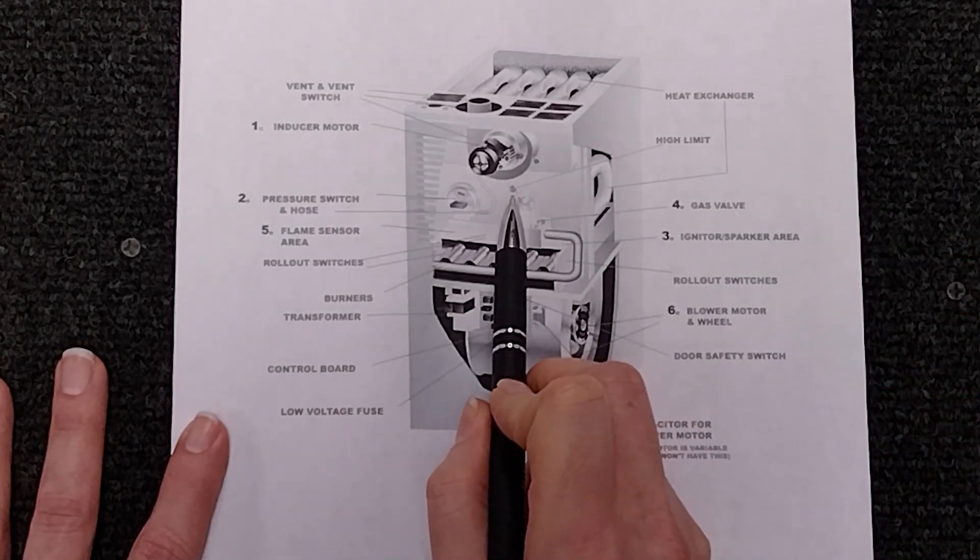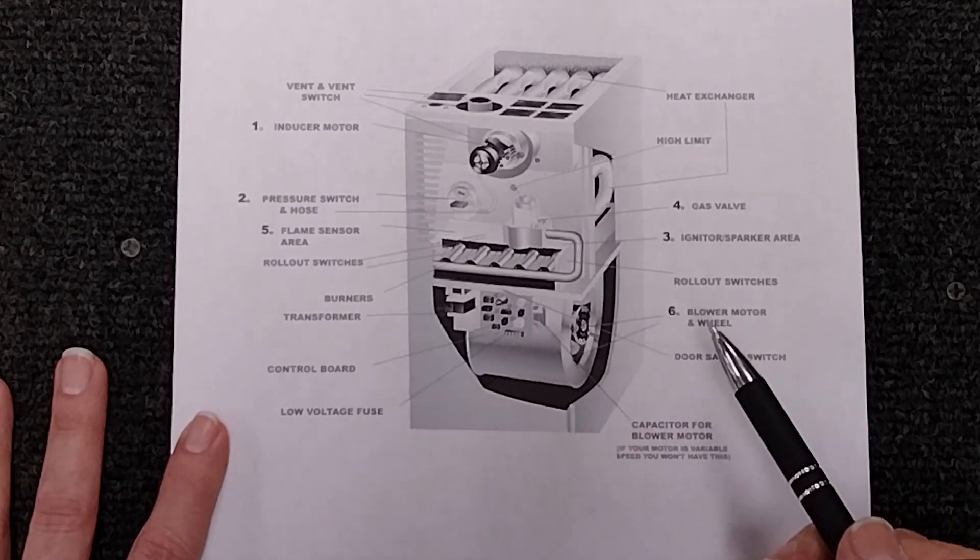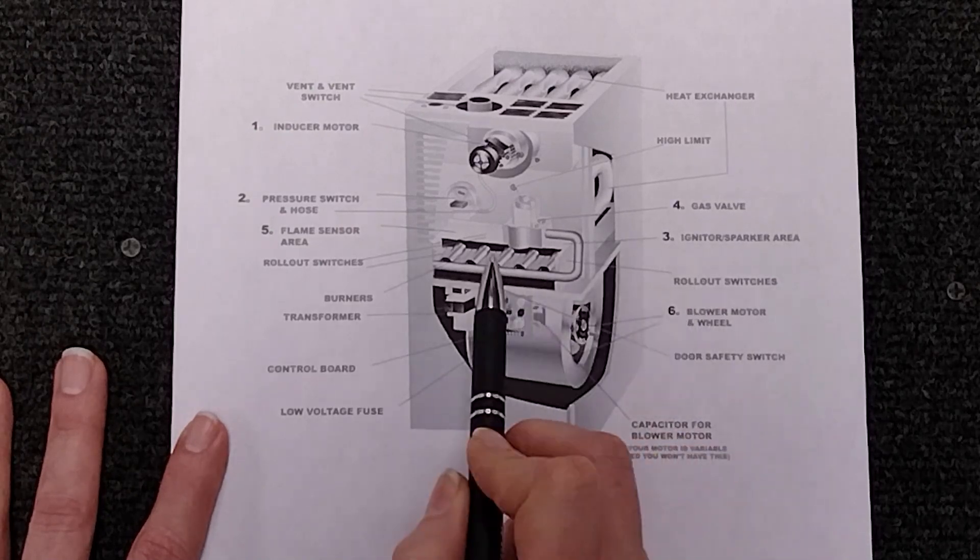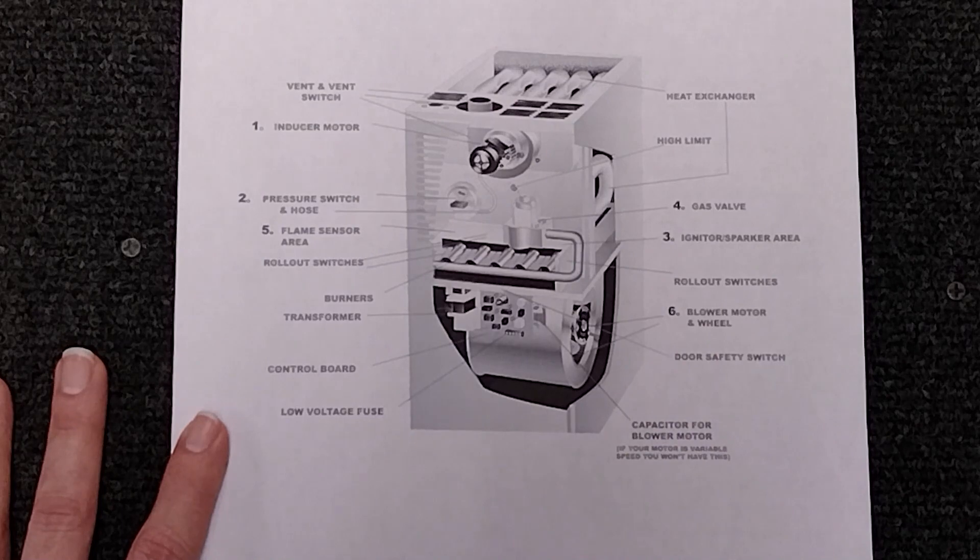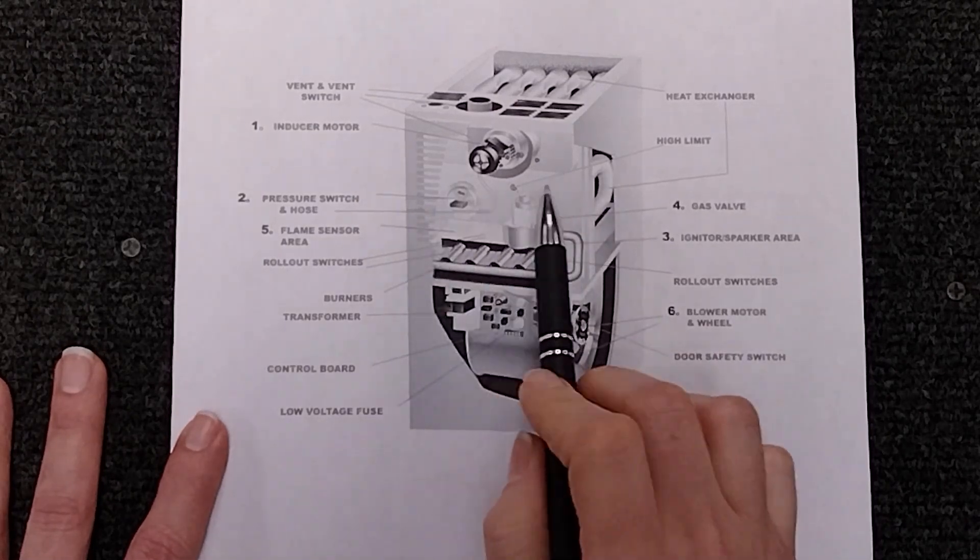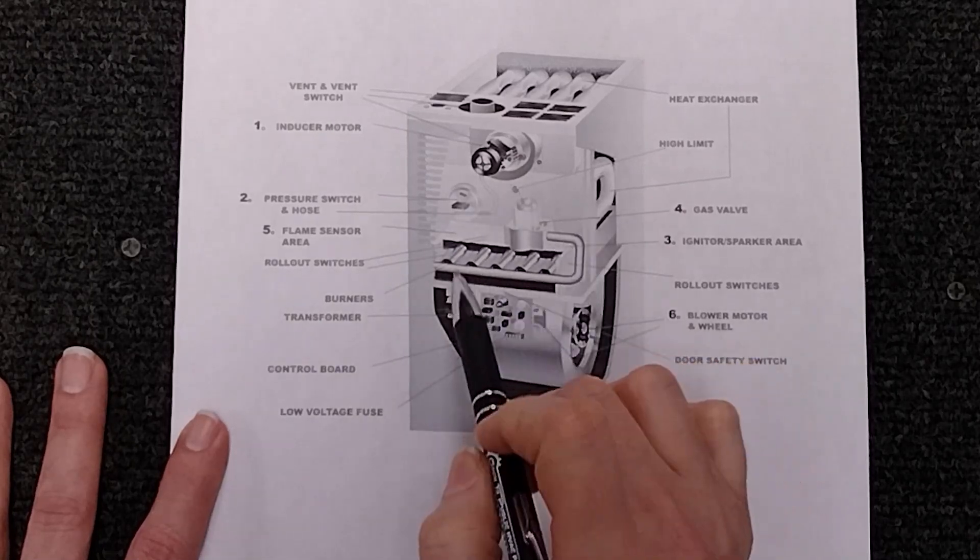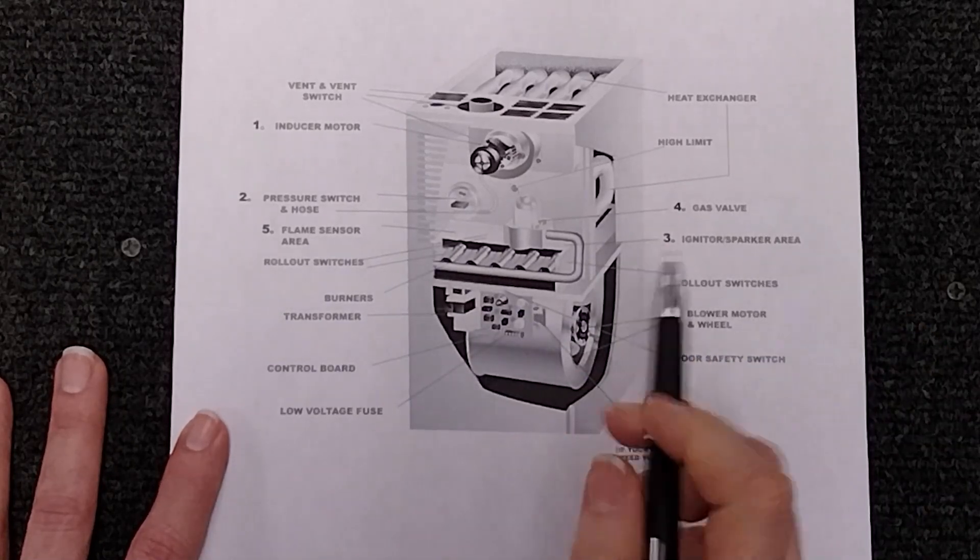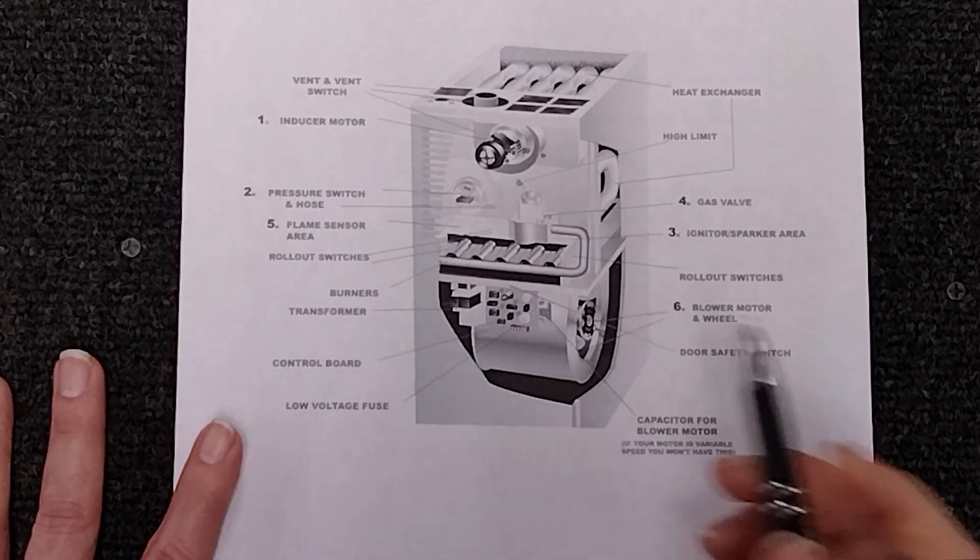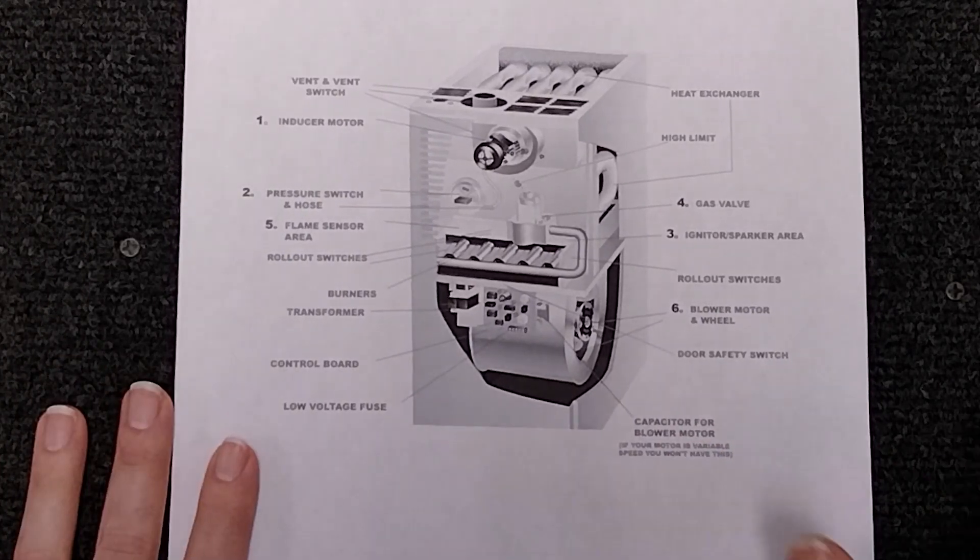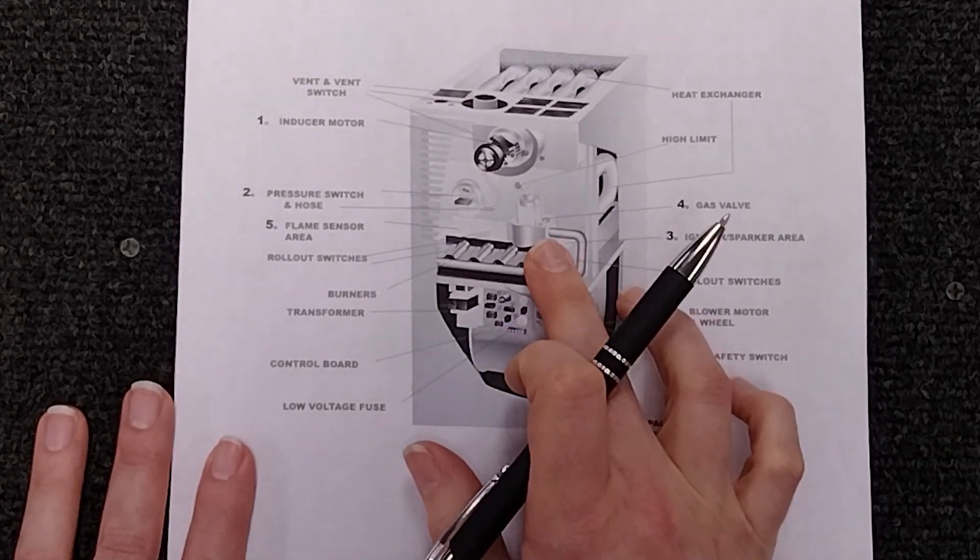Your high limit, your limit switch, sometimes they'll be on your blower. You have rollout limit switches on your burners that are manual. And once it goes and most people their limit switches are in line so it has to go through all of these limit switches before it gets to the point of your control board sending power to your gas valve.